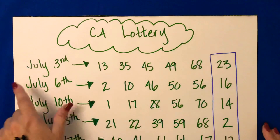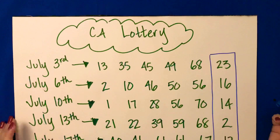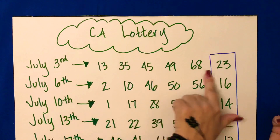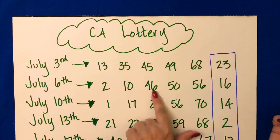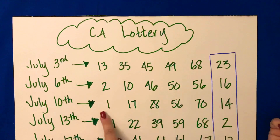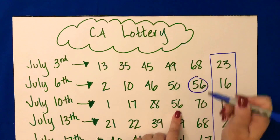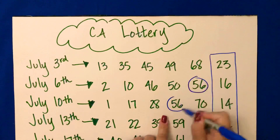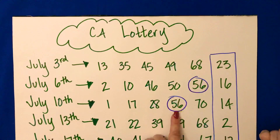So looking at all of this data, we can look and see — do we find any numbers that are occurring more than once? I'm just kind of looking along to see, and then as soon as I hit here, I can notice that the number 56 repeats. So that's a number that occurred more than once.